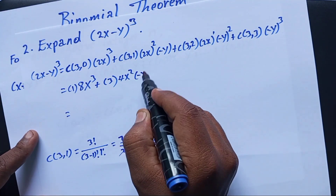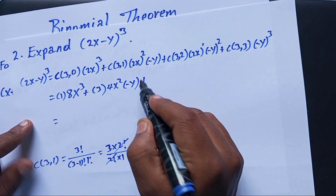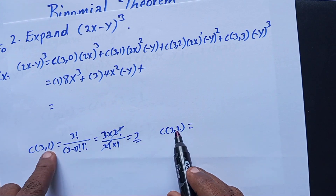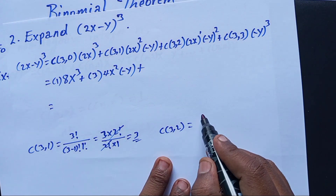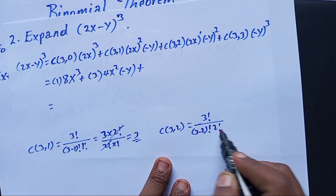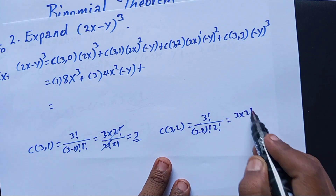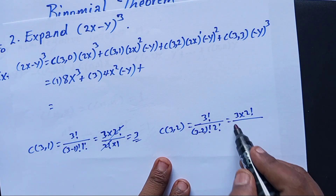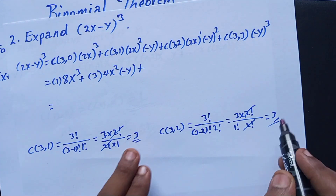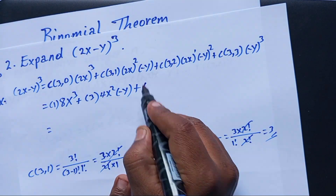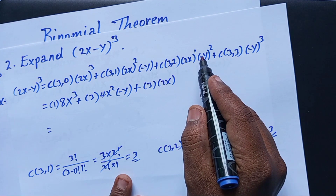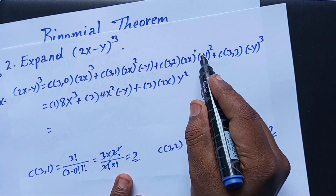Then C(3,2): 3! over (3-2)! times 2! equals 3 times 2! over 1! times 2!. The 2! cancels, giving 3. Note that C(3,2) equals C(3,1), both equal to 3. So C(3,2) times 2x times (-y)^2 gives 3 times 2x times y^2, which is 6xy^2 (since negative squared is positive).